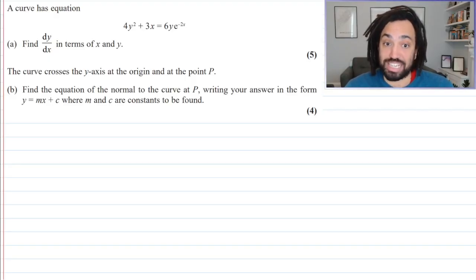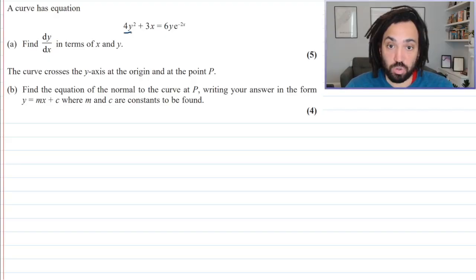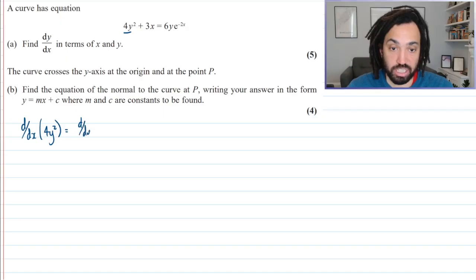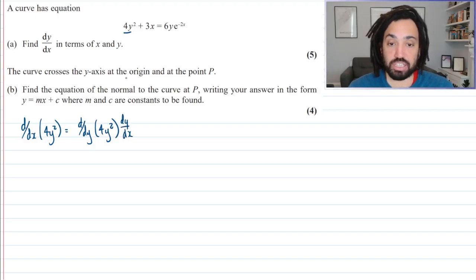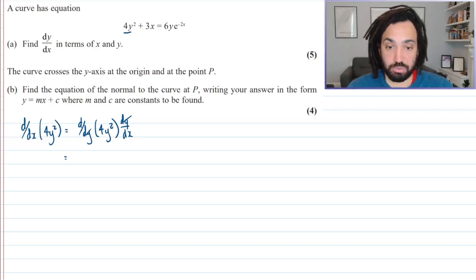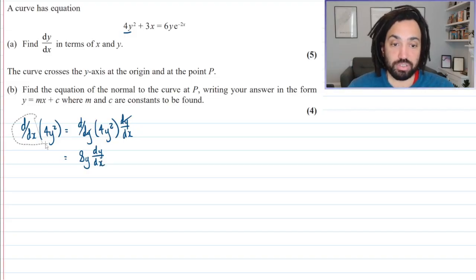So if I were to differentiate this part, this 4y squared, then I would want to differentiate that with respect to x. But the problem is that is a y function. So instead what I do is I just differentiate it with respect to y, and then I multiply by dy by dx. What is it when I differentiate it with respect to y? Well, it is 8y and then I multiply by dy by dx. So that is how we differentiate implicitly.